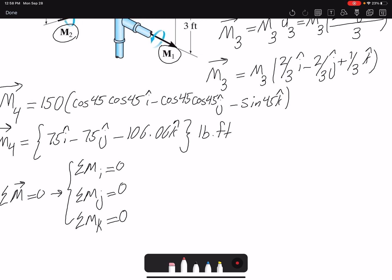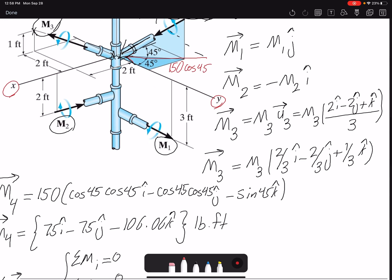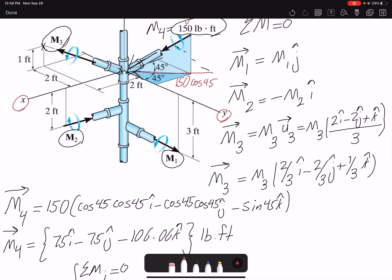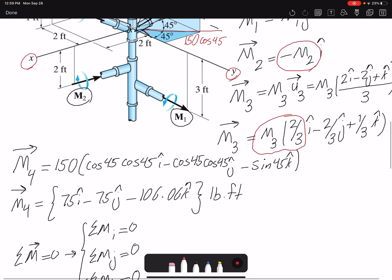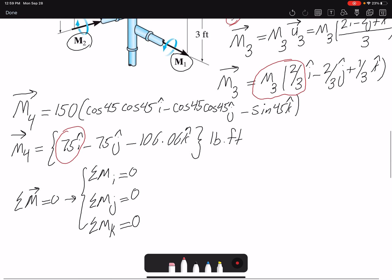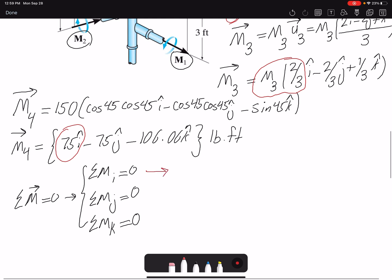All the components in i - let's see what components in i we have. M1 doesn't have any component in i. We have one component here in i, another component in i, and then another component. So we have three components for i. Let's write our three components: negative M2 plus 2/3 of M3 plus 75 equals zero.